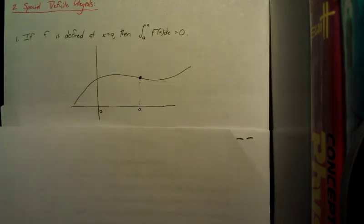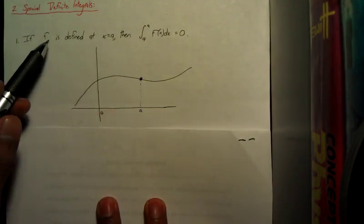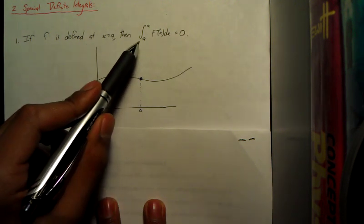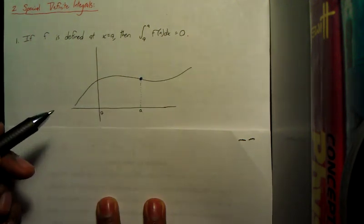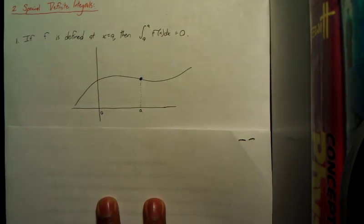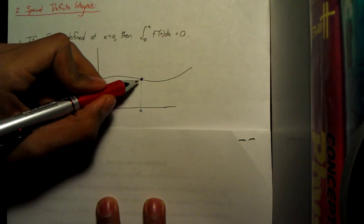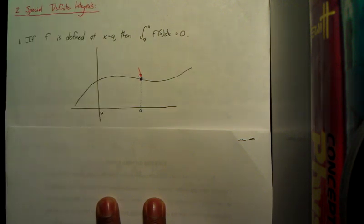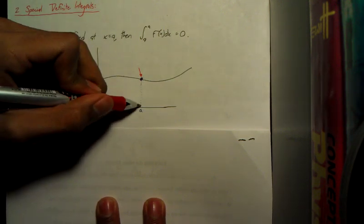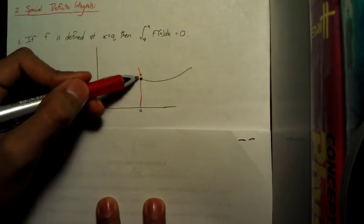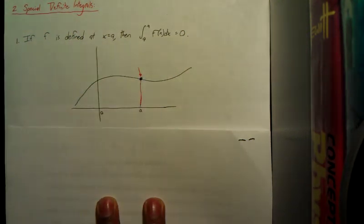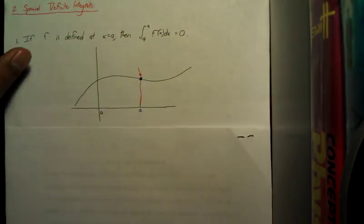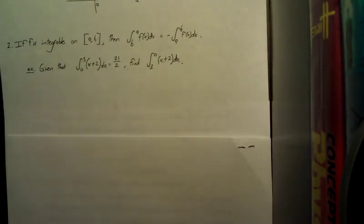So there's just some special definite integrals. They're pretty simple. If f is defined at x equals a, then the integral from a to a of the function equals 0. Pretty much what it's saying is that if you've got some point on the graph a, then the area under that curve, a line doesn't have area because it's only one dimension, so it's going to equal 0.